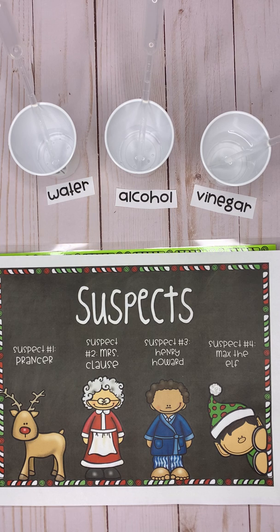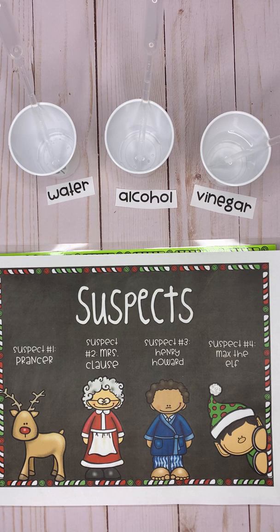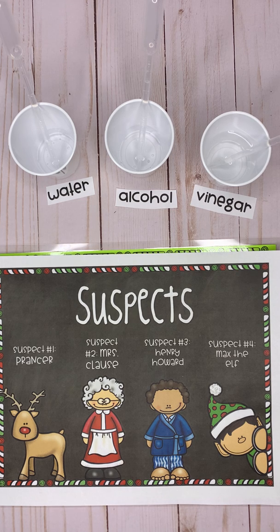Before we get started you need to know that a chemical reaction is something that in science indicates that a change is taking place at the molecular level. That's a big word, so don't worry about it — all you need to know is that scientists can look for evidence of a chemical change by making observations. An observation is something that you notice — something that you see, smell, or feel in science — that lets us know a change has taken place.